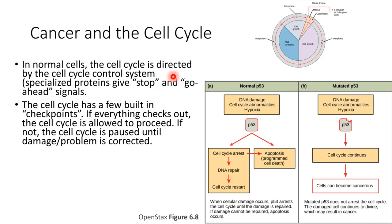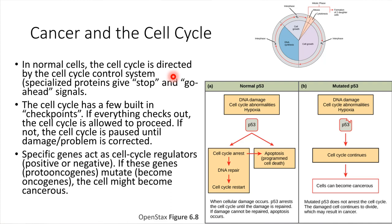If problems are detected, a lot of times those problems can be corrected, but the cell needs to take the proper amount of time to do that. Some of the genes involved in this regulation process — if there's a problem with one of those genes, then the cell cycle is not going to be controlled properly. And essentially, this is what causes cancer to develop.